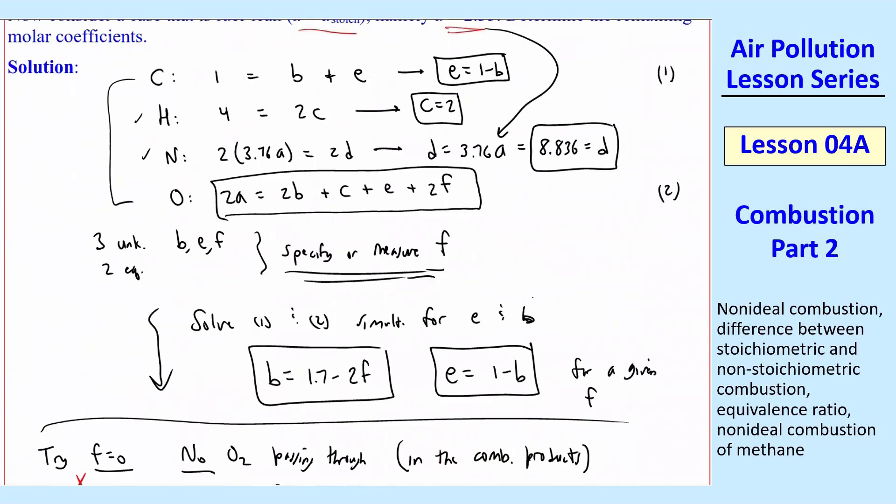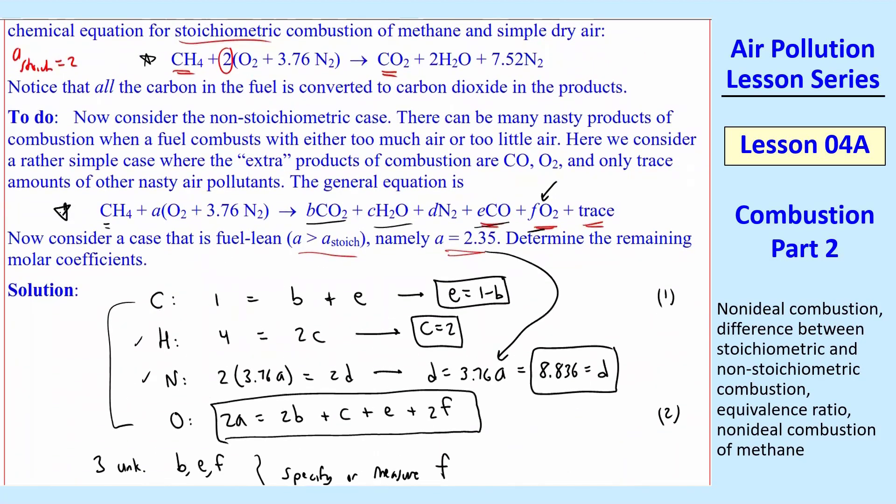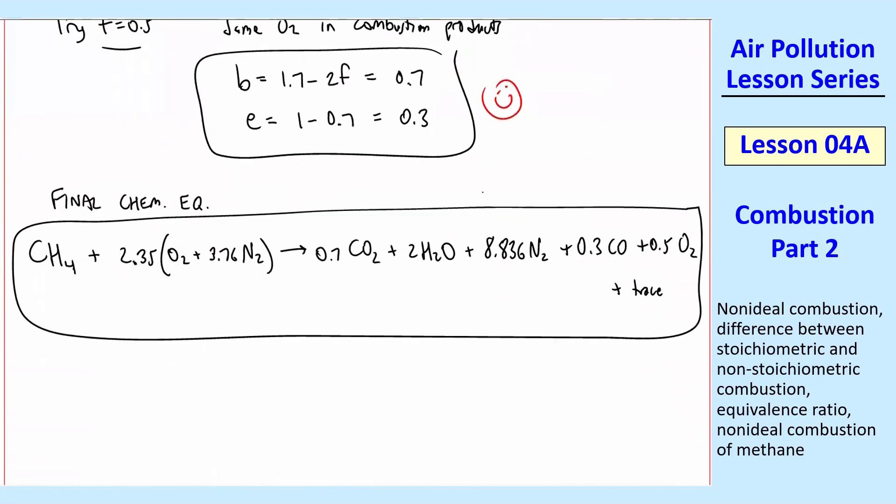If I go back to the original equation here and fill in all the variables A, B, C, D, E, and F, I get this final chemical equation. So we see that all this stuff is pretty harmless. The CO2 is harmless to our lungs. It's a greenhouse gas. Of course, water vapor, nitrogen doesn't do anything. Oxygen is fine. The only bad thing here is the CO, carbon monoxide. So that's our air pollutant.